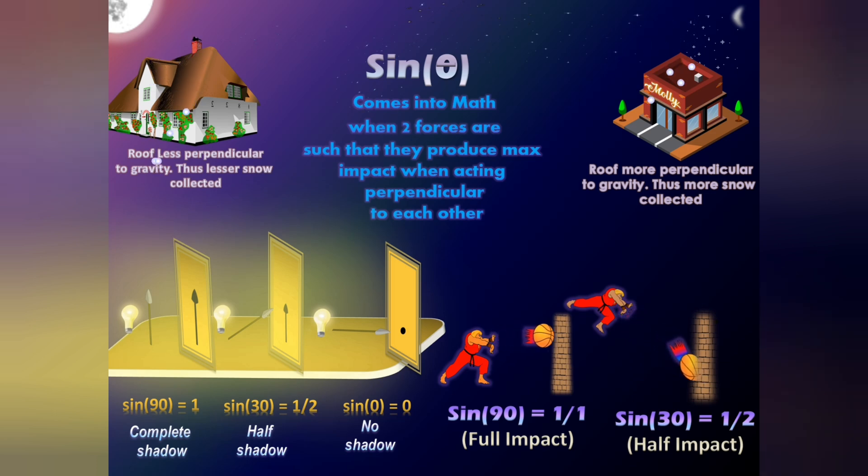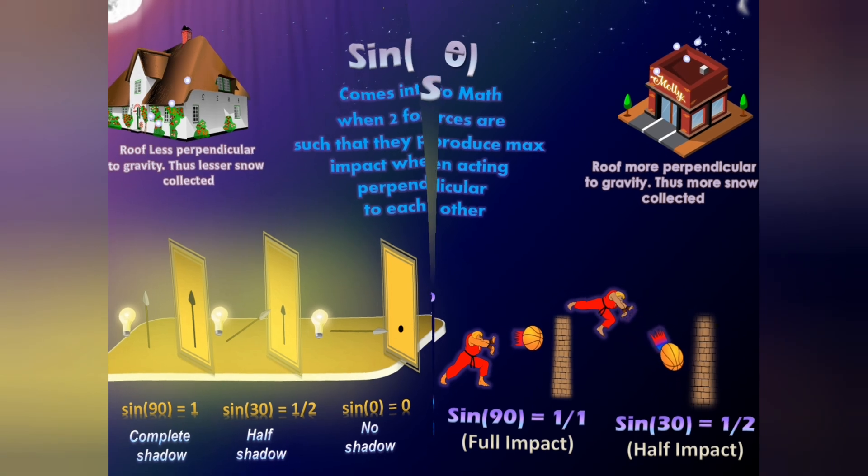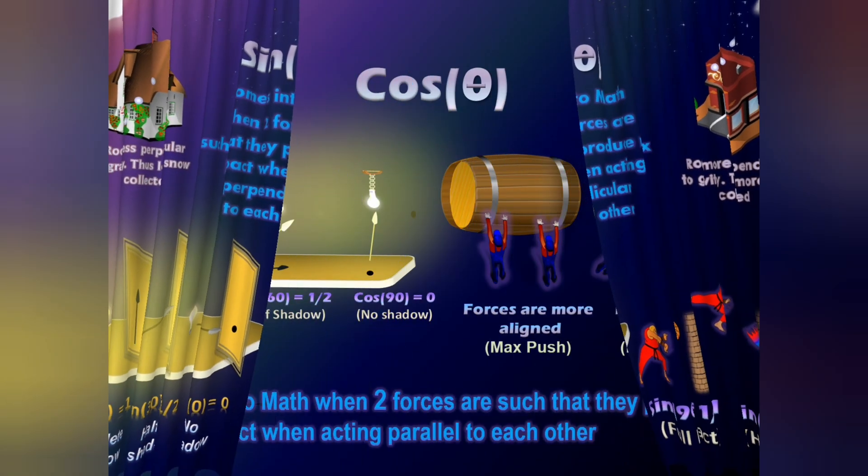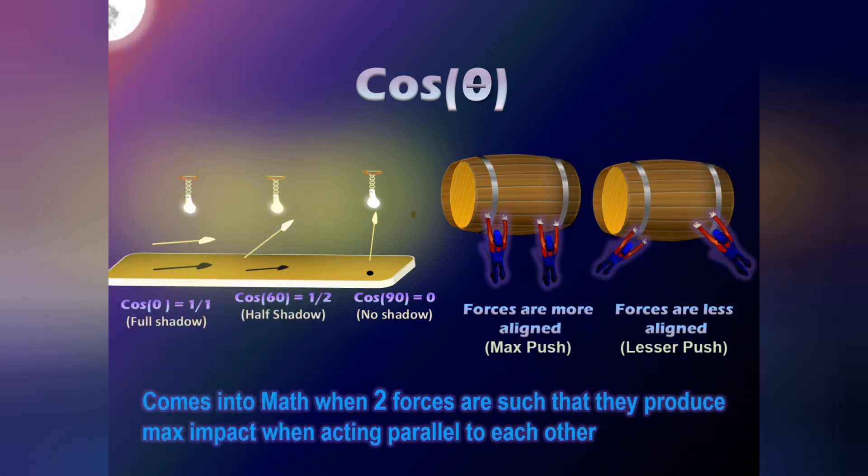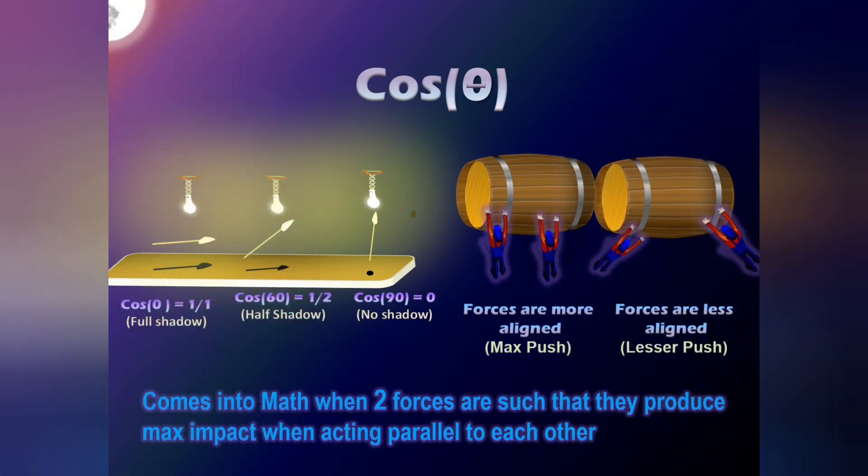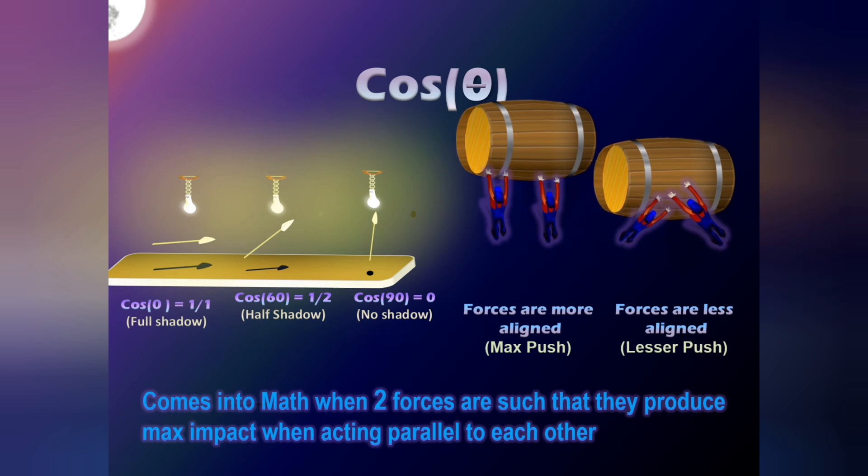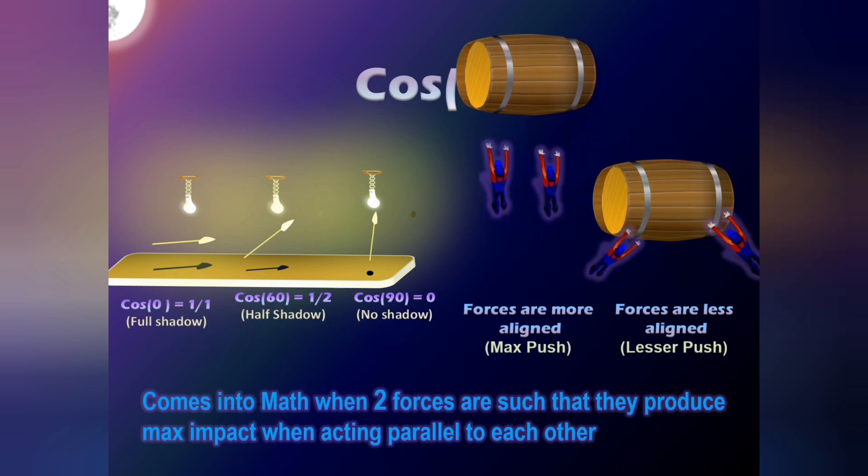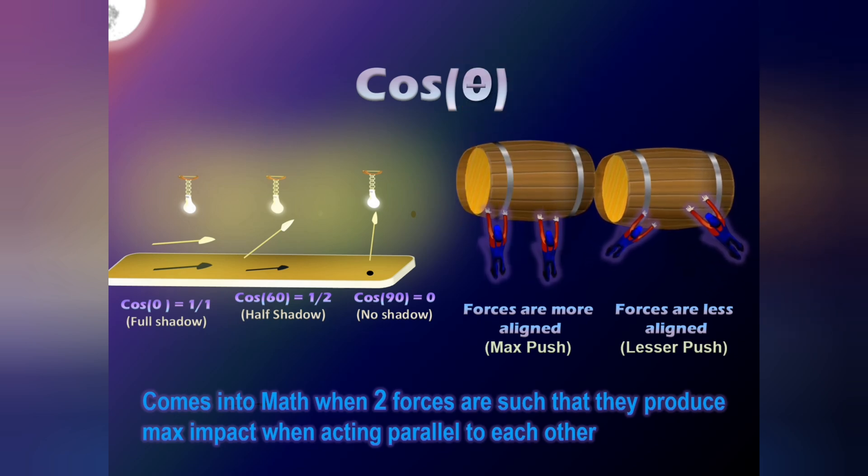Now, coming to cos theta. Cos is a measure of how much parallel two forces or objects or influences are with respect to each other. Say two forces push a drum. Won't the maximum effect be when these forces are acting parallel to each other?